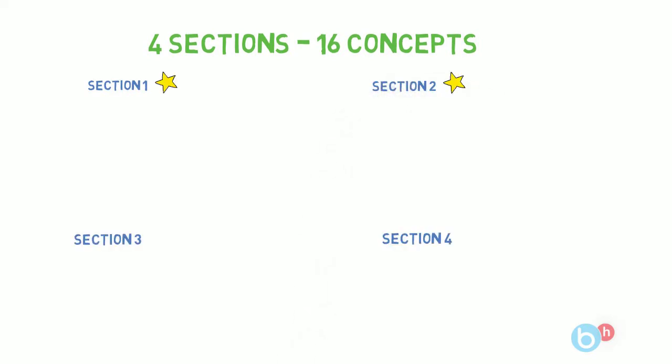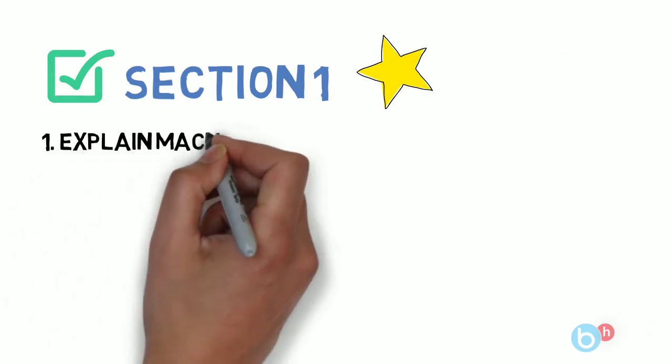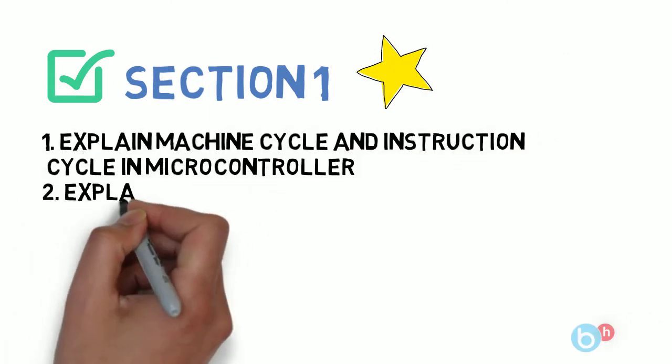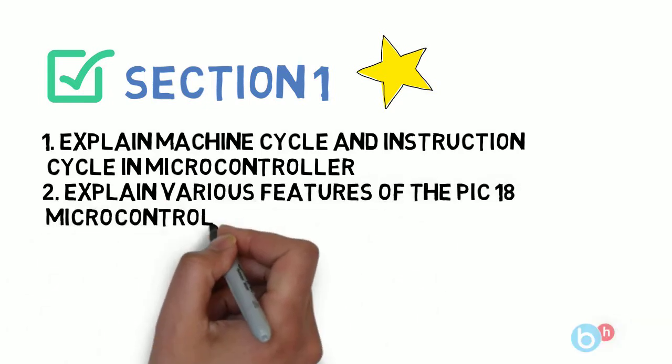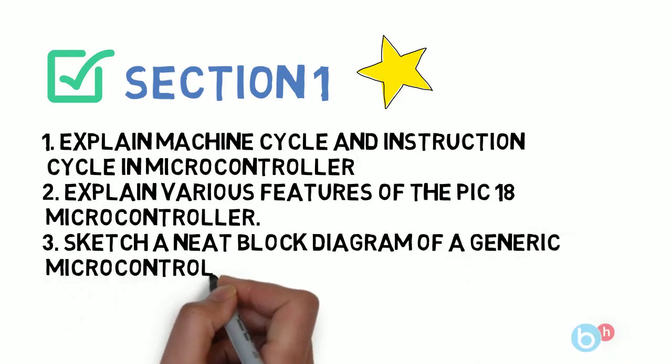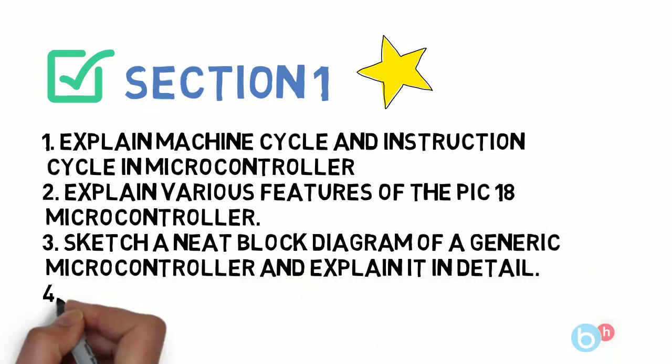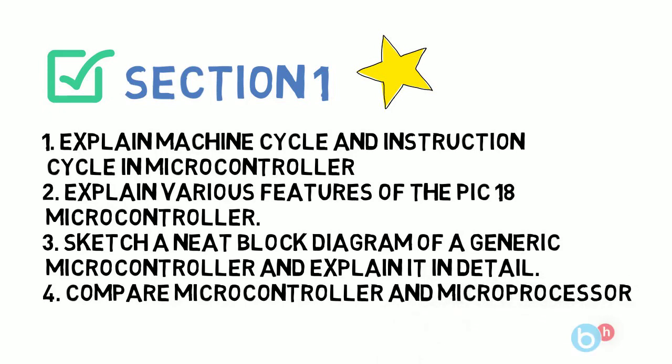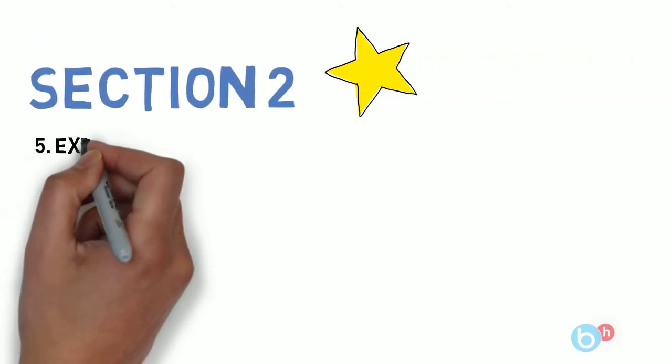Talking about Section 1, first is explain machine cycle instruction cycle in microcontroller. Next is explain various features of PIC 18 microcontroller. Next is sketch a neat block diagram of generic microcontroller and explain it in detail. Last one is compare microcontroller and microprocessor. So these 4 questions for Section 1.